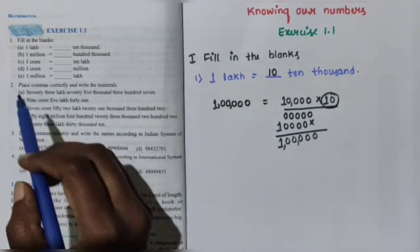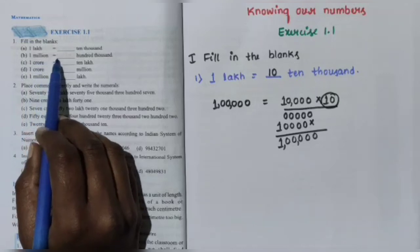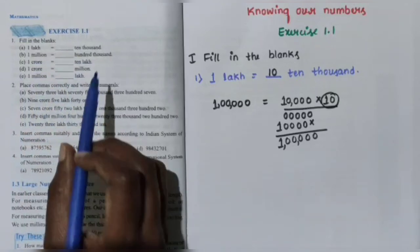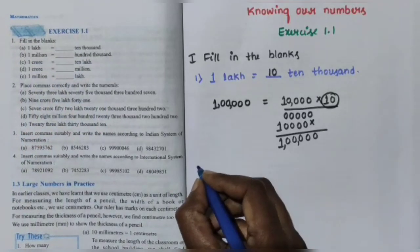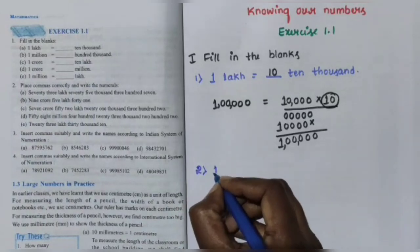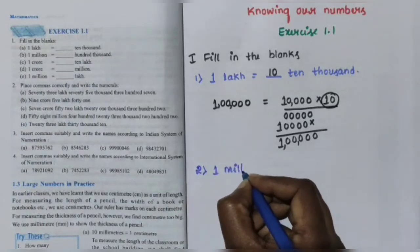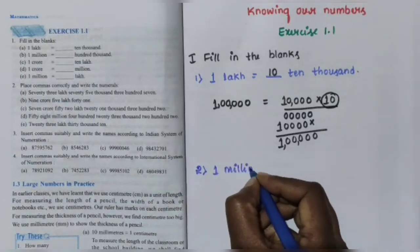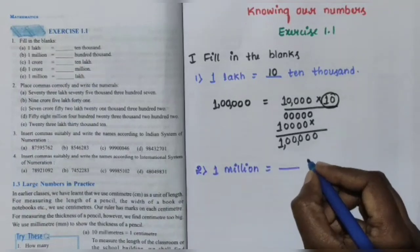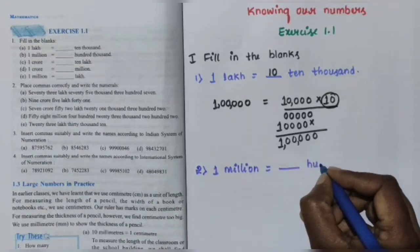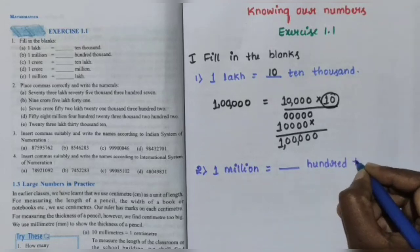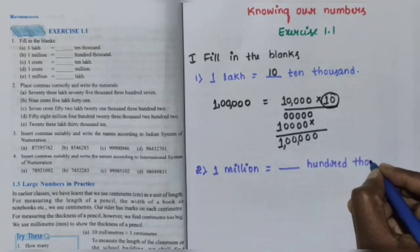Next, question number 2: 1,000,000 is equal to dash 100,000.